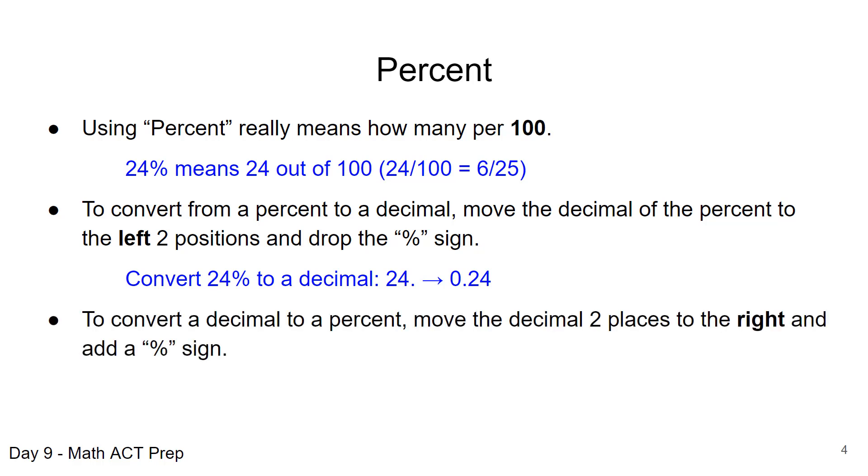Now to convert a decimal to a percent, if we want to move backwards, we're going to move the decimal two places to the right and then we're going to add on the percent sign. So here now converting 0.325 to a percent, we're going to take that decimal point between the 0 and the 3 and move it two places to the right and this will convert this decimal to 32.5%.